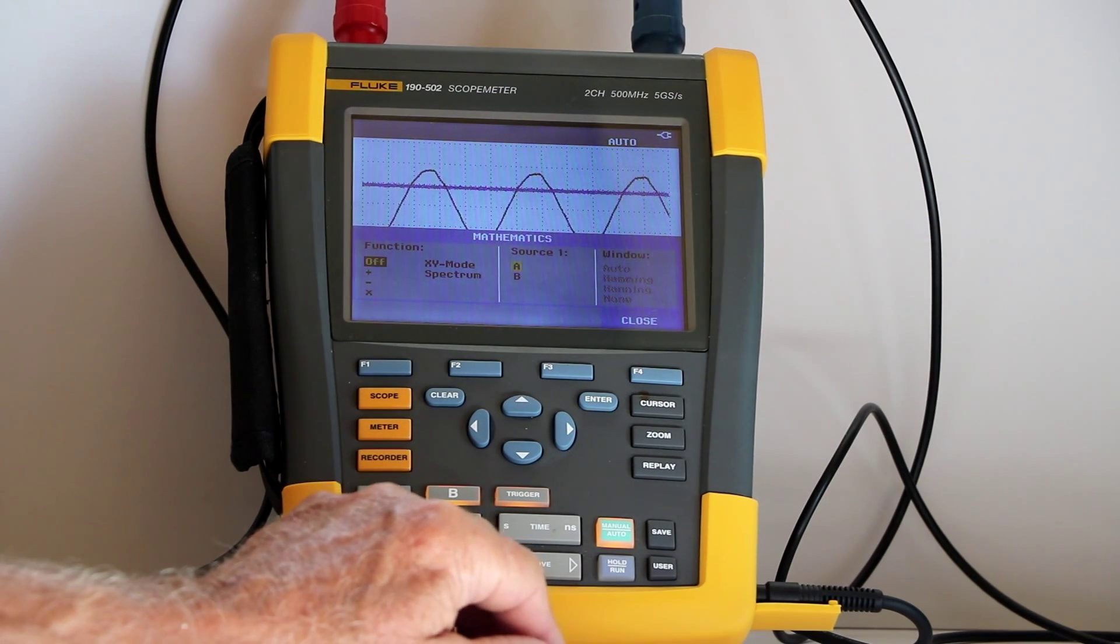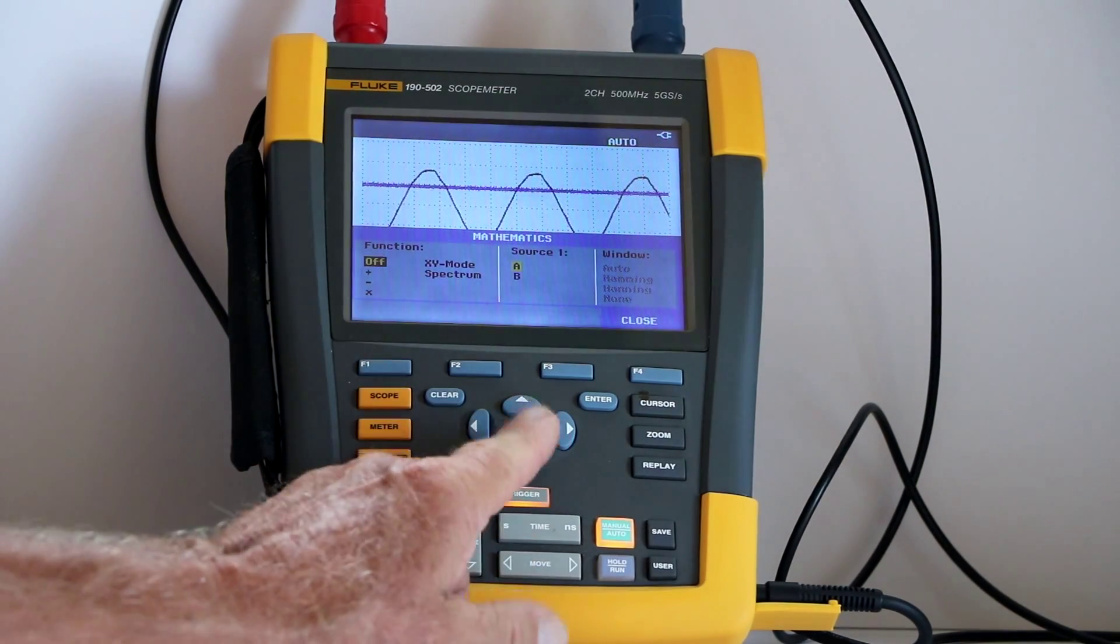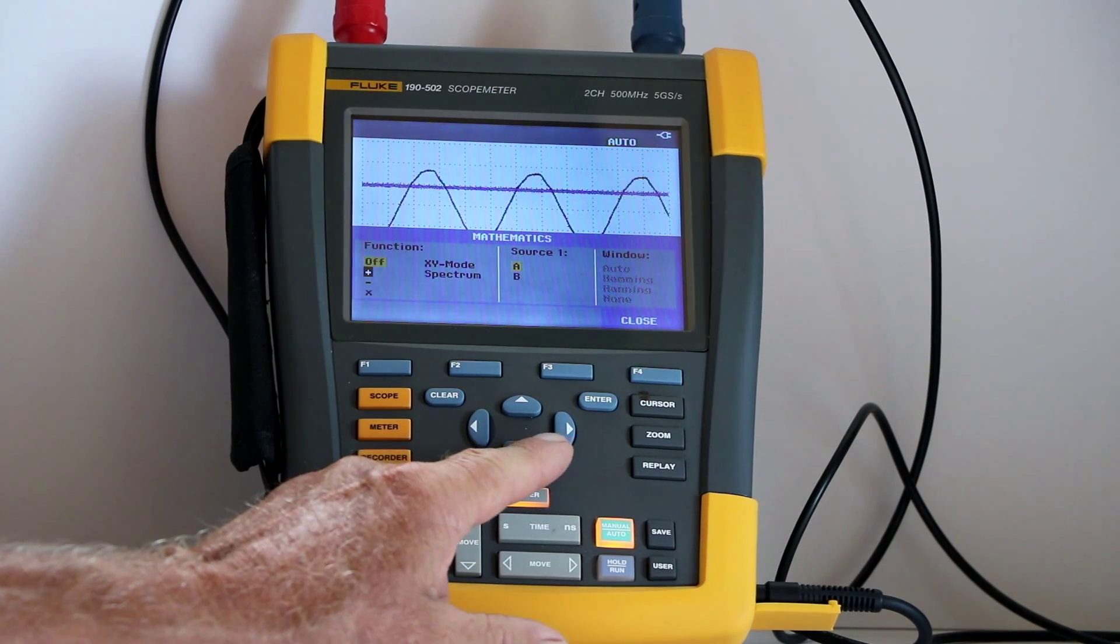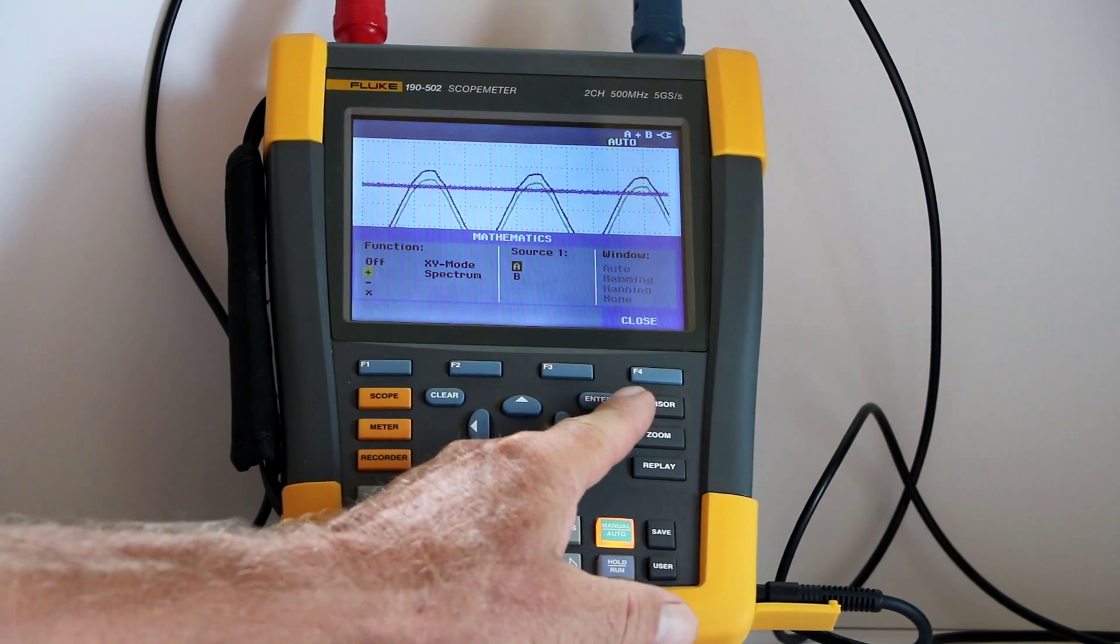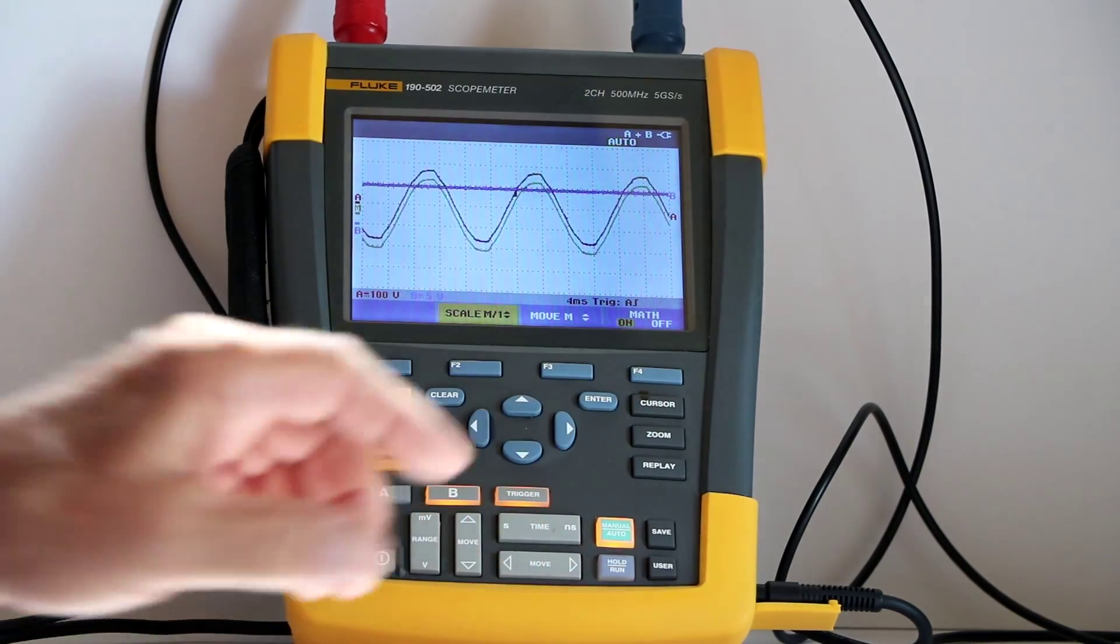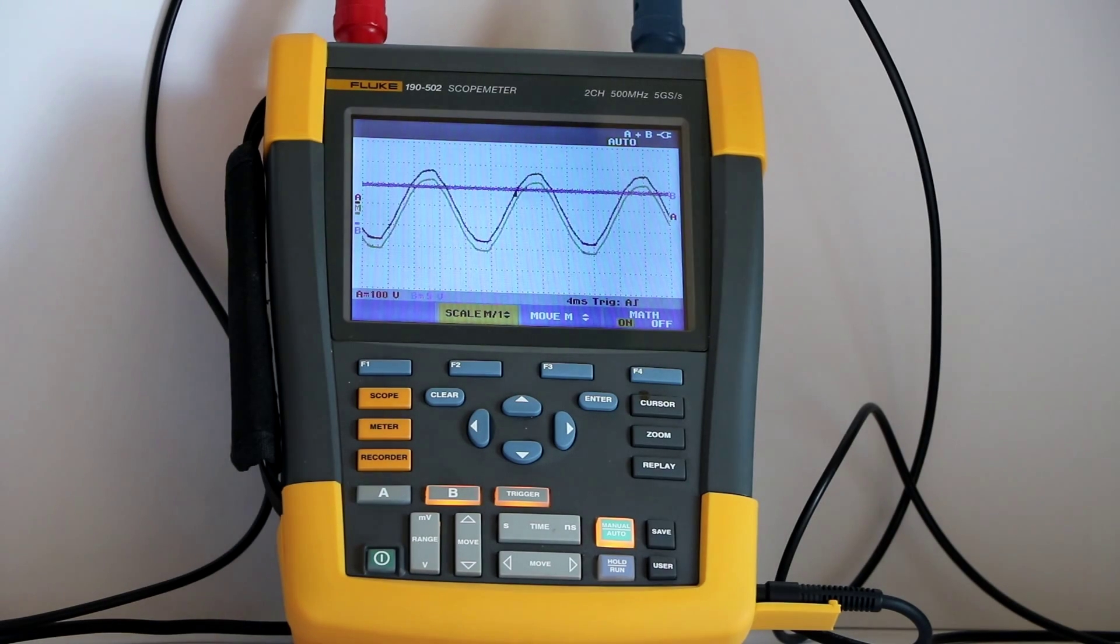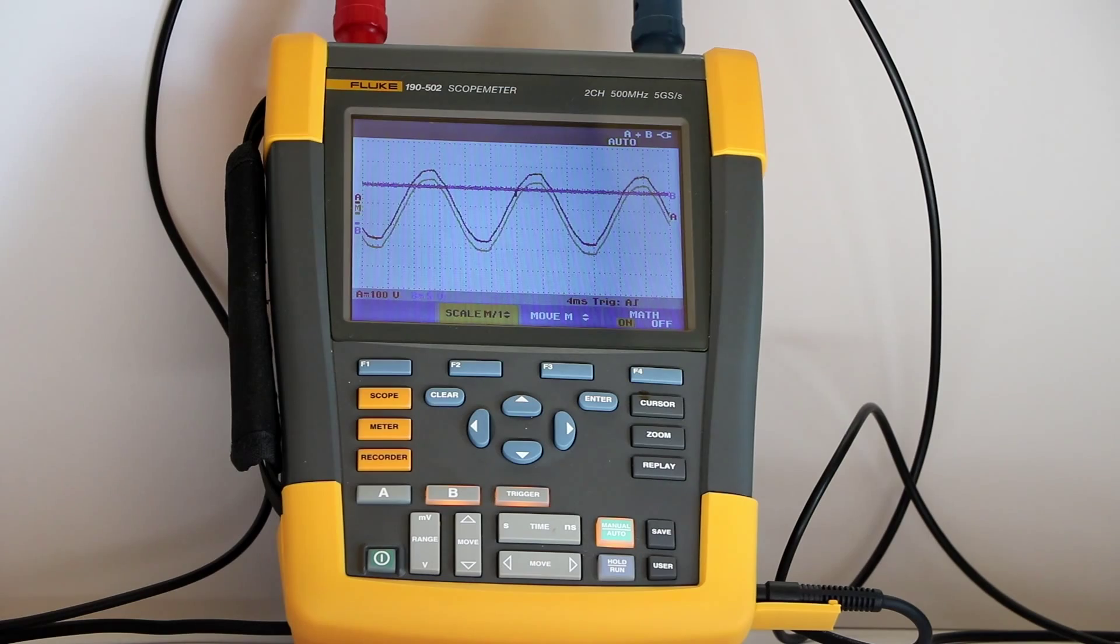The next step is to press plus, minus, multiply, or the XY mode. Again, press enter. The math function key labels will be displayed now.